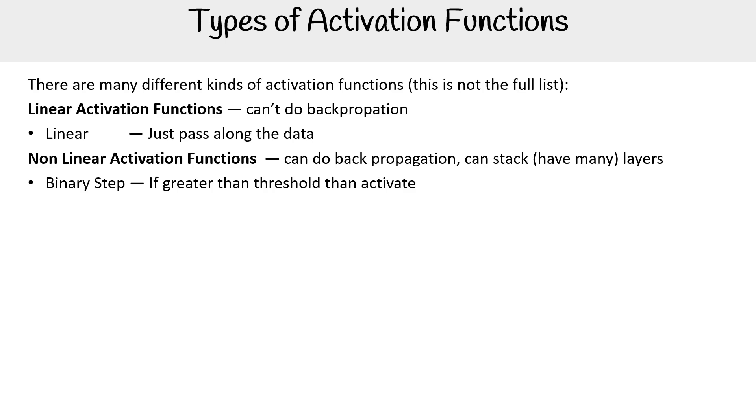Here we have binary step: if greater than threshold, then activate. We have sigmoid, used in binary classification, susceptible to the vanishing gradient problem.